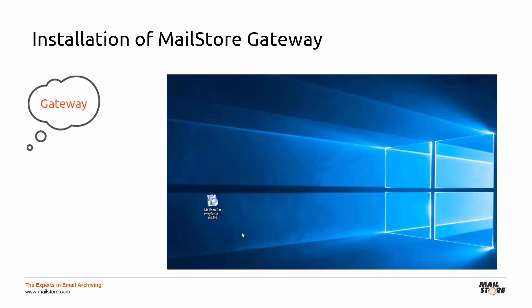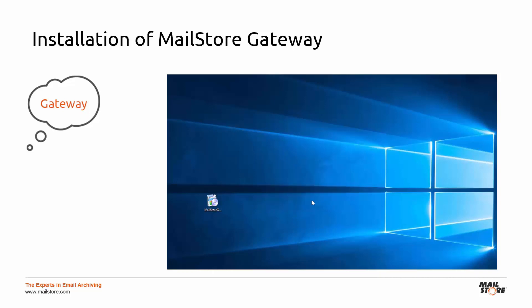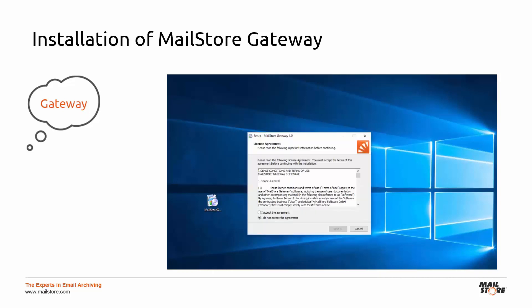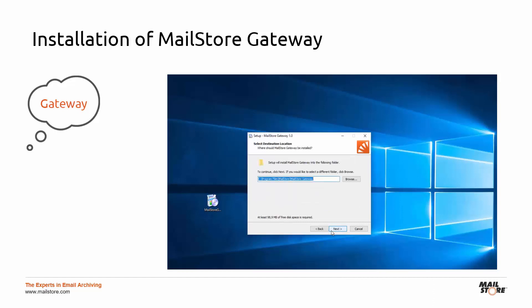Download the MailStore Gateway setup file from the download area of the MailStore website, execute the file and follow the on-screen guidance. Now choose the language you want to use for the installation, agree to the license and usage conditions, define a destination folder in which to install the software and click on Continue.